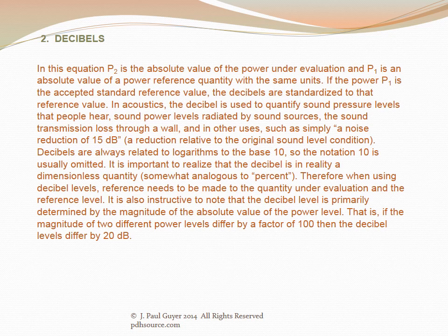If P2 is the accepted standard reference value, the decibels are standardized to that reference value. The decibel is used to quantify sound pressure levels that people hear, sound power levels radiated by sound sources, sound transmission loss through a wall, and other uses such as a noise reduction of 15 dB relative to the original sound level. Decibels are always related to logarithms to the base 10, so the notation base-10 is usually omitted.